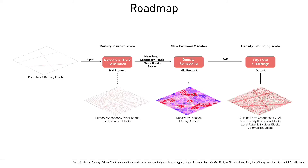To achieve our target of cross-scale generation, we considered both the urban scale and building scale, as well as the link in between. Thus, the density at the building scale will be based on the overall requirement from the urban scale. Our roadmap contains three steps: road network and block generation at urban scale, density remapping linking the two scales, and city form generation at building scale.